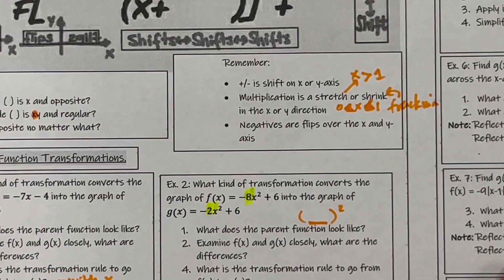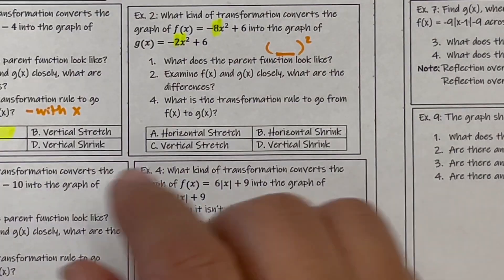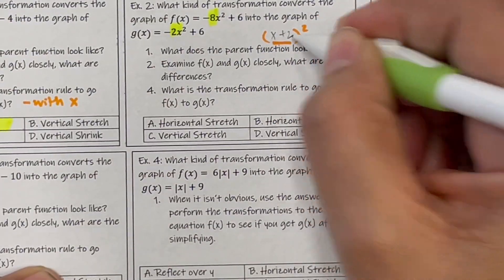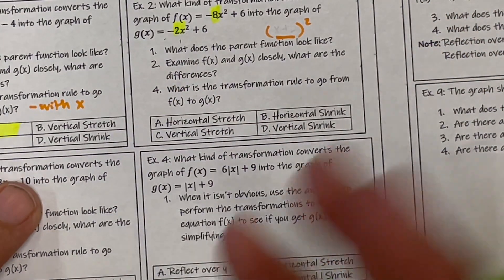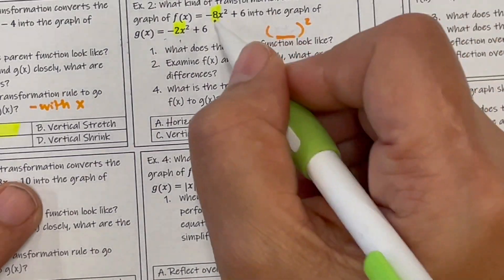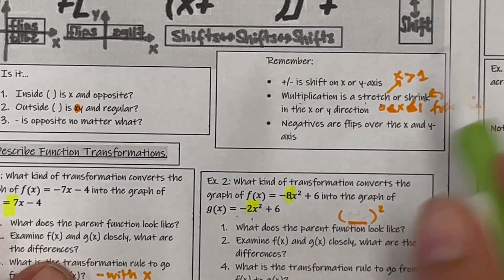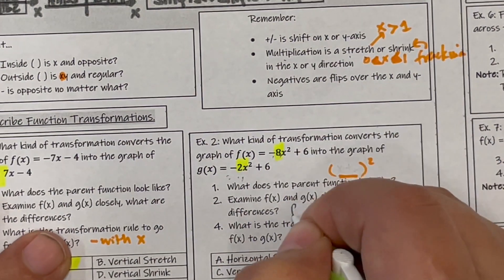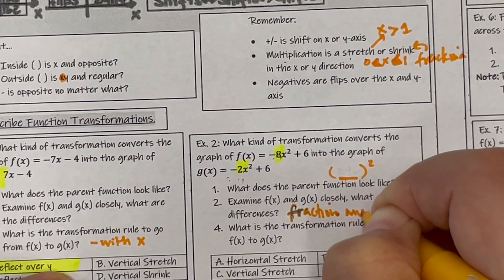There are only a few options. It can't be adding or subtracting because that would appear differently inside the function. So it's going to be multiplication — what are you multiplying eight by to get two? It's a fraction multiplication. So the rule is going to be a multiplication — either a stretch or a shrink depending on what it is. To get it smaller, it's a fraction multiplication.